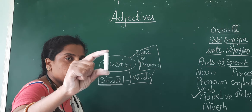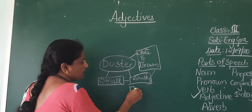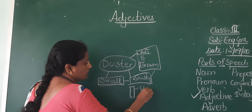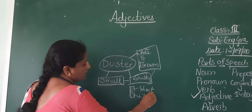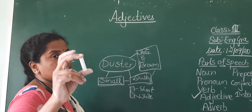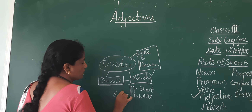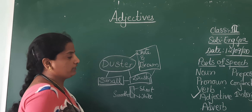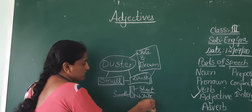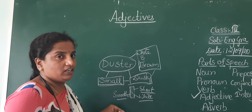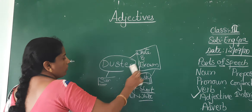Suppose this is a chalk piece. The chalk piece is short. It is white in color. It is very smooth. The chalk piece here is a noun, but these words — short, white, smooth — explain or tell us about the qualities of the noun.